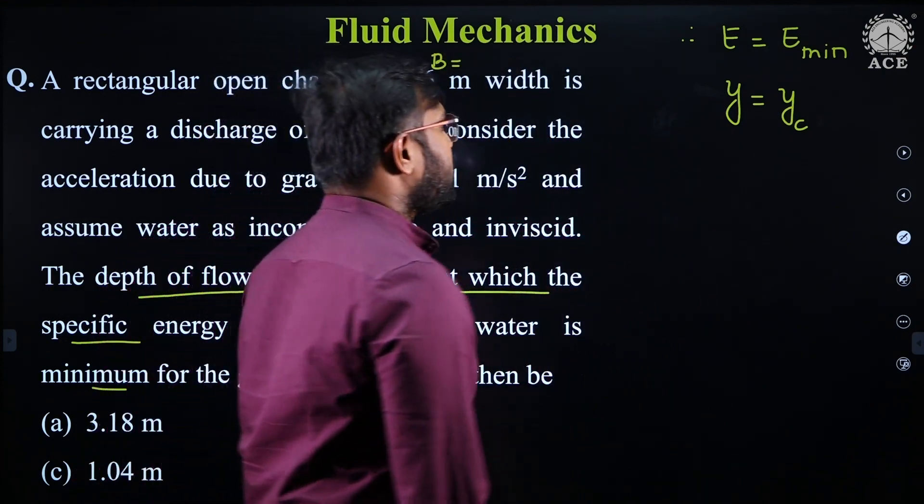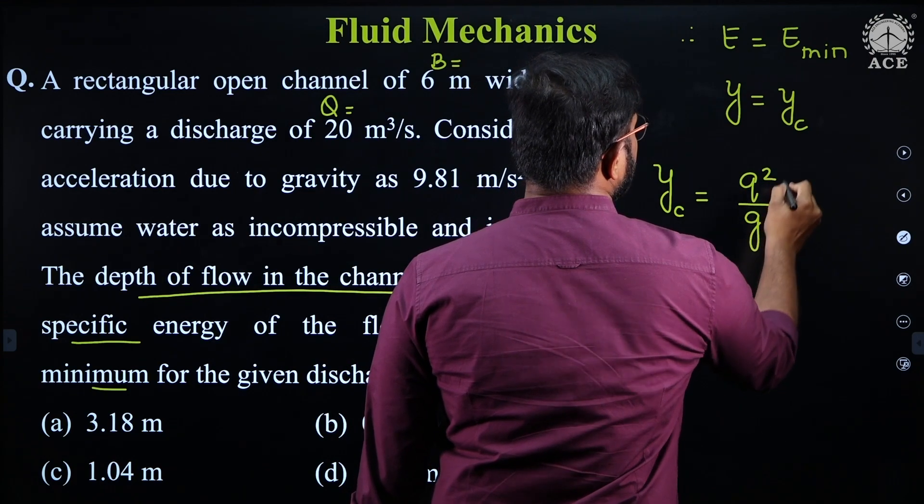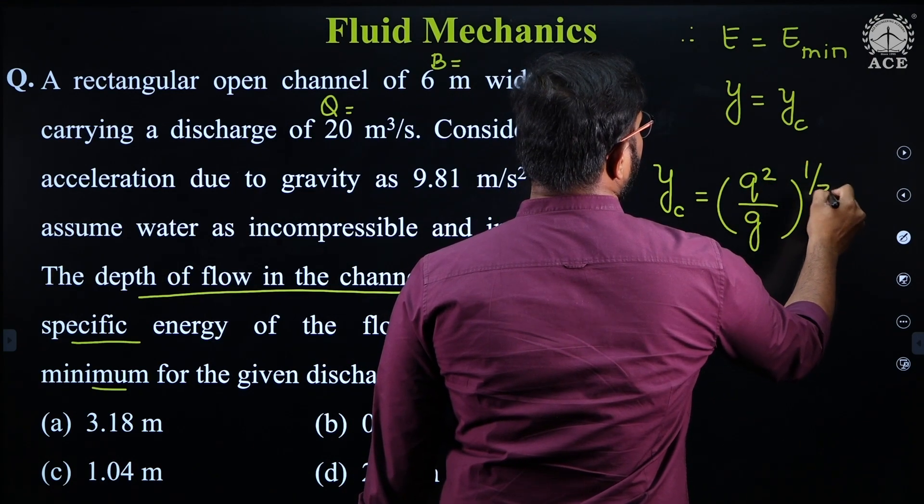And you know that the critical depth in the case of rectangle is q square by g whole to the power of 1 by 3.